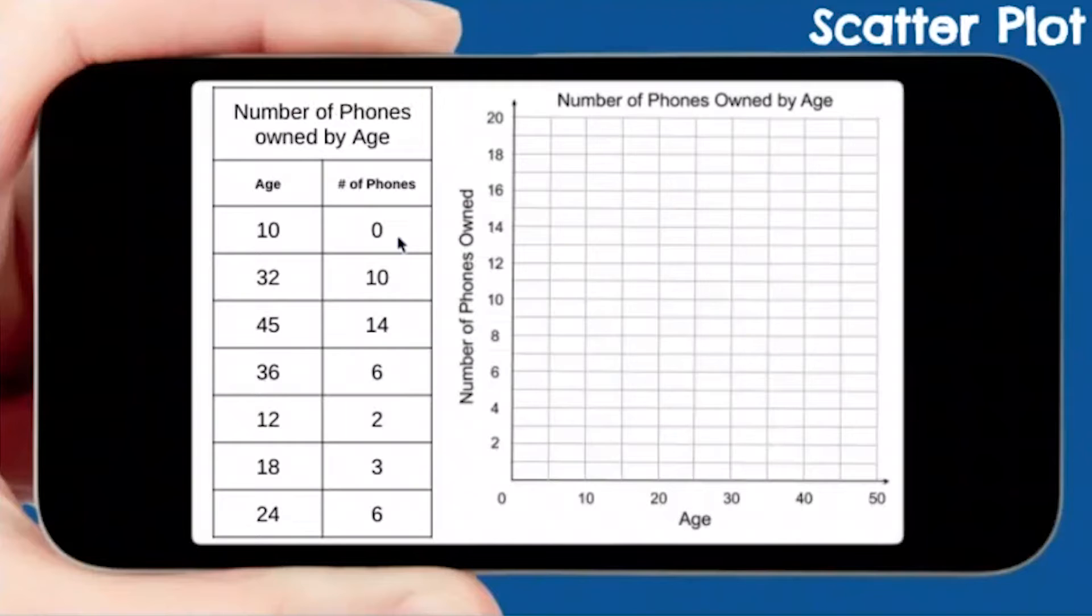I want you to go ahead and think about this. Remember, we're always going to move to our x-axis, then you move up. So I'm going to move to 10, find 10 on the x-axis, and then move up for the y-axis. Okay, so hopefully you paused it. We have 10, 0. So I went over 10 and up 0. Next, we had 32, 10. So I went over 32, up 10. So a 32-year-old had 10 phones.